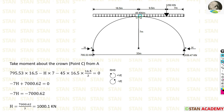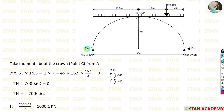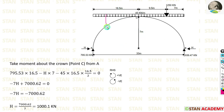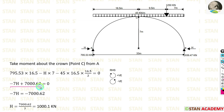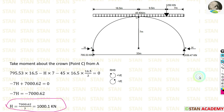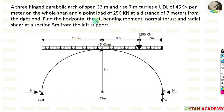Now we find the horizontal thrust H by taking moments about the crown hinge at point C. VA acts clockwise at a distance of 16.5 meters, so positive. H acts anticlockwise at the rise of 7 meters, so negative 7H. The UDL acts anticlockwise about C as well. Solving, we get minus 7H + 7000.62 = 0, which gives H = 1000.1 kilonewton.